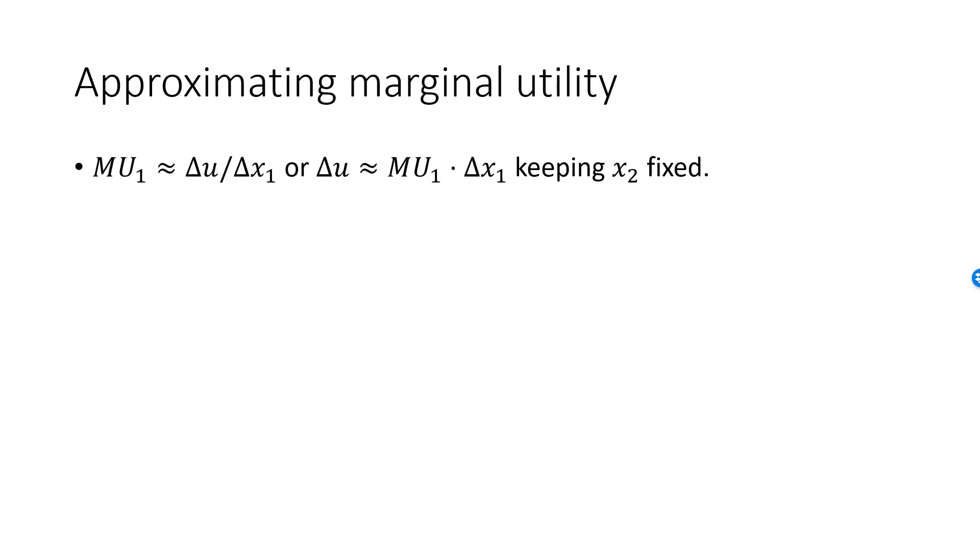For delta x1 equal to 1, we see that MU1 is approximately equal to the increase in utility when we consume one more unit of good 1 with no changes in x2. This is a useful way of visualizing marginal utilities.